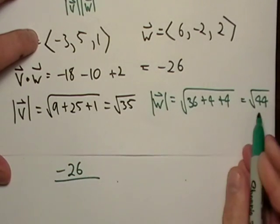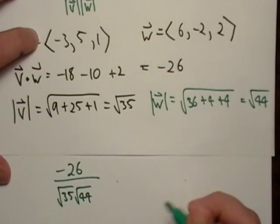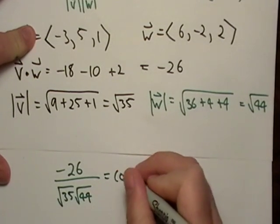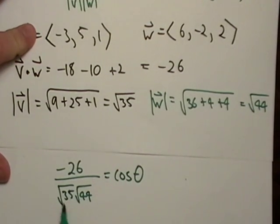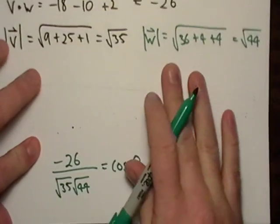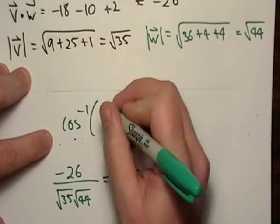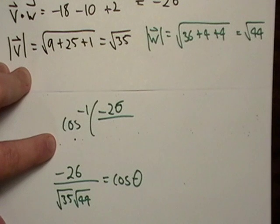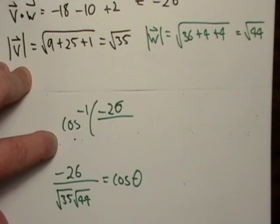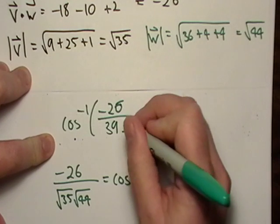So given this information, negative 26 divided by square root of 35, square root of 44 is equal to cosine theta. So that tells us, you know, that tells us some stuff. I mean, we already knew really about the triangle, but let's find some stuff we didn't already know. Let's go inverse cosine of negative 26 over, what is this? Square root. I'm just going to do my calculator.